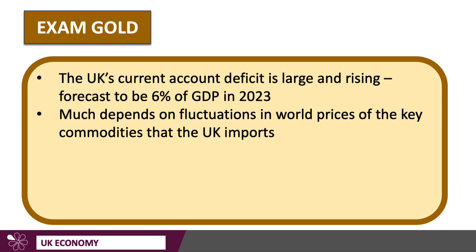The UK's current account deficit, as of spring 2023, is rising and it's large. It's worth going into the exam knowing it's going to be about 6% of GDP in 2023. That figure is unlikely to be the exact outcome because the current account balances the difference between some big numbers — exports and imports — and the world price of gas, oil, copper, zinc, and steel can change, making our spending on imports a little bit unpredictable.